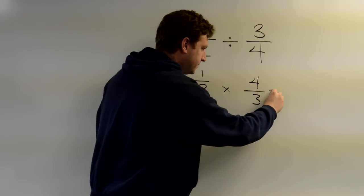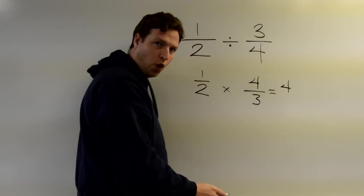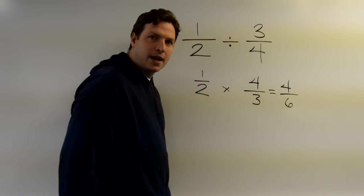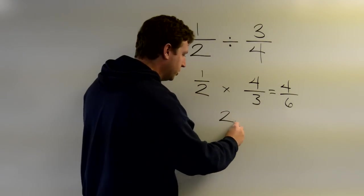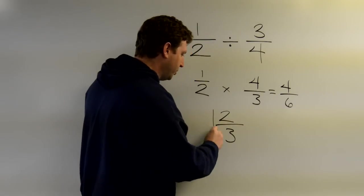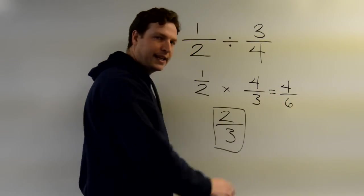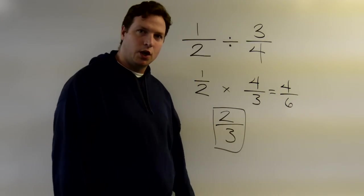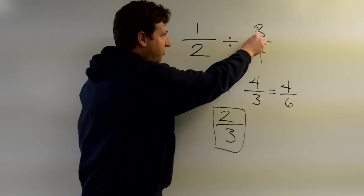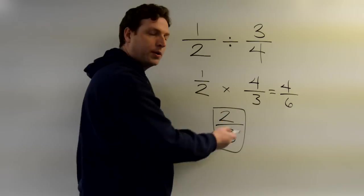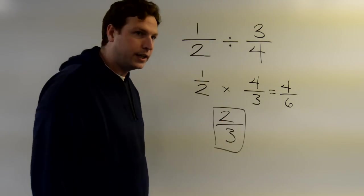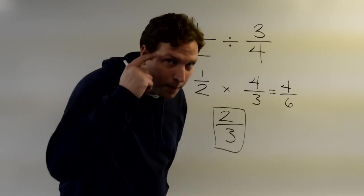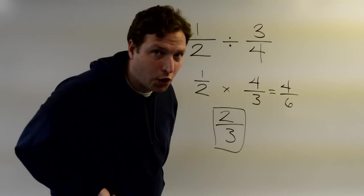One times four is four, two times three is six. Four over six. Can we reduce? Absolutely. That becomes two-thirds. Both four and six are divisible by two. When we divide them by two, we end up with two-thirds. So remember, just flip the fraction and multiply, which is the easiest operation. This is called a reciprocal. Remember that word.